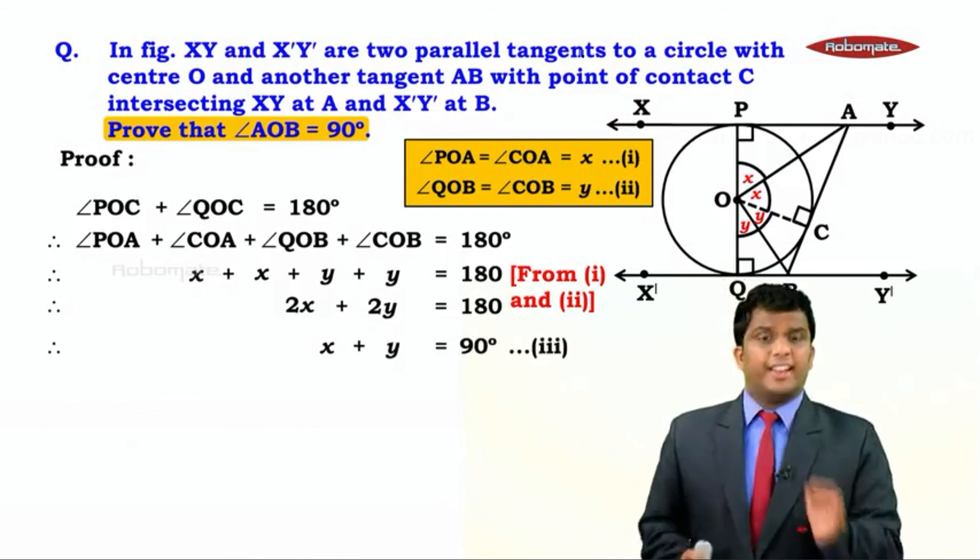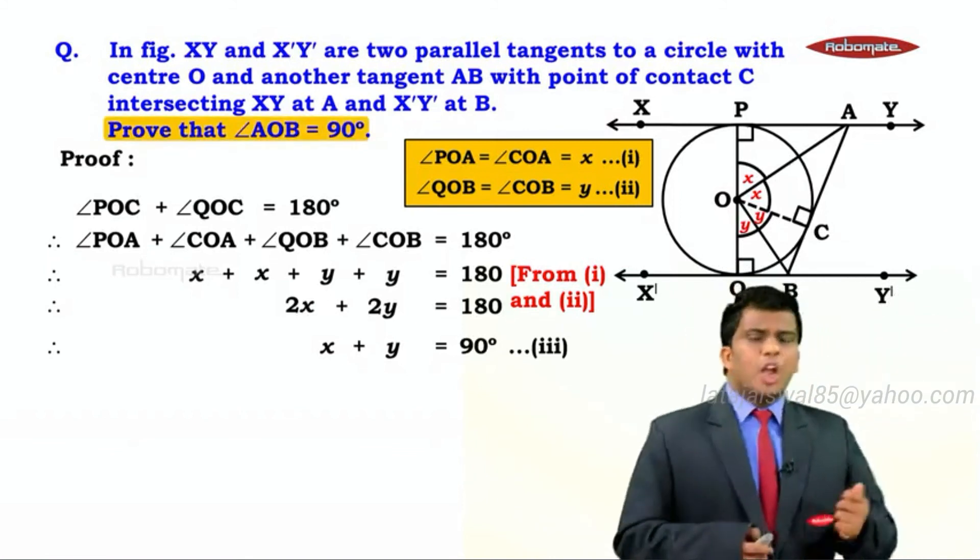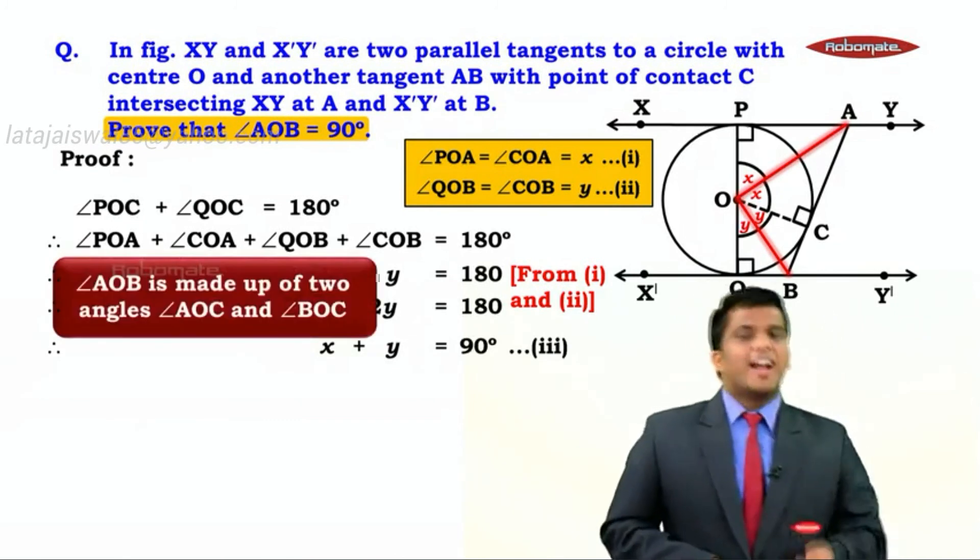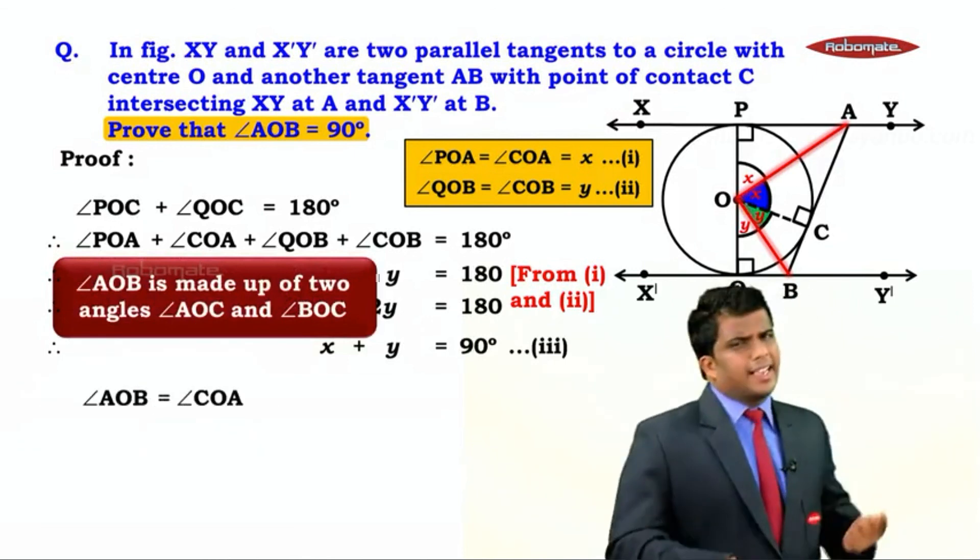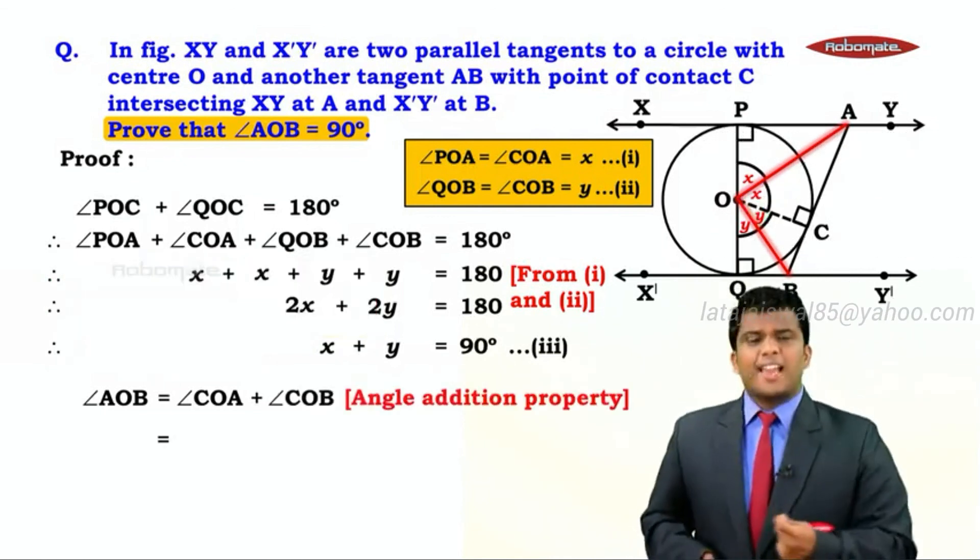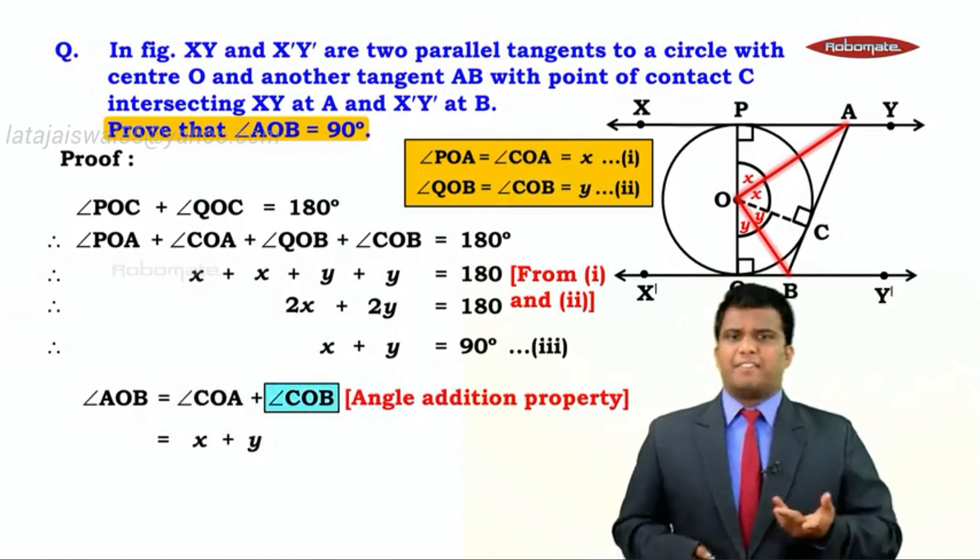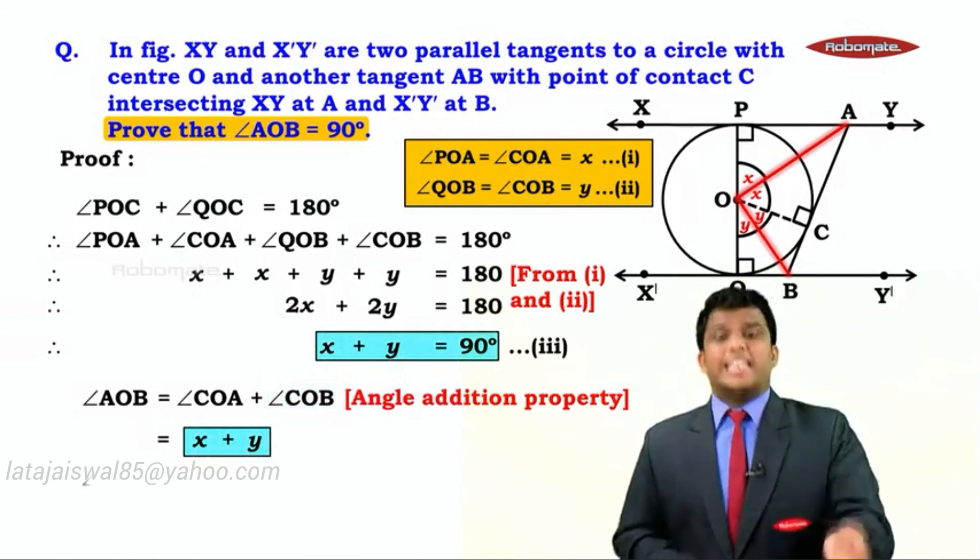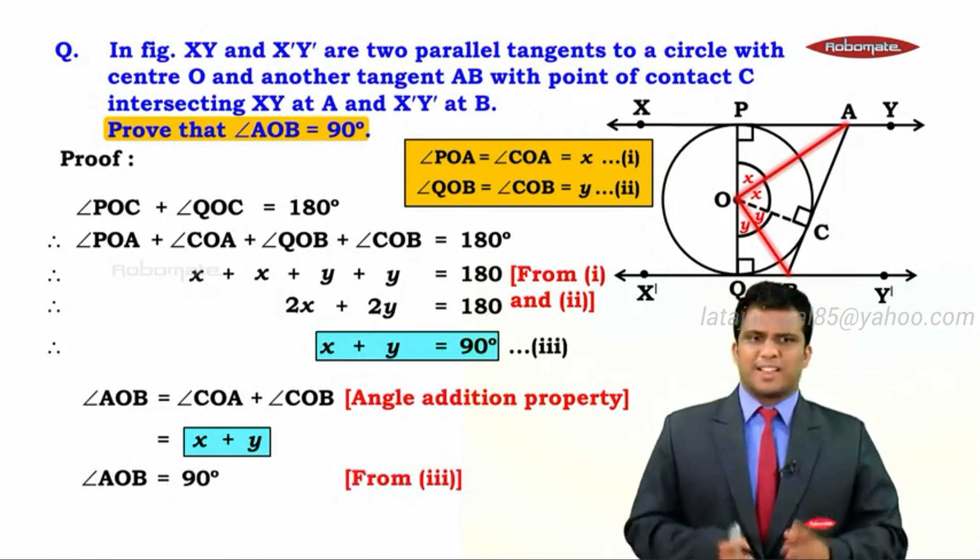X plus Y equals 90 degrees, but what are we going to do with this? We require angle AOB to be 90. Observe angle AOB. Angle AOB is made up of two angles: angle AOC and angle BOC. So we can write angle AOB as angle COA plus angle COB. Angle addition property. The value of angle COA is X from result 1, and the value of angle COB is Y from result 2. But X plus Y is 90 degrees from result 3. That means angle AOB equals 90 degrees. And that's what we need in this mesmerizing sum, children.